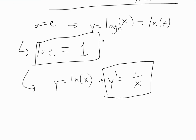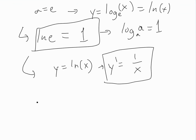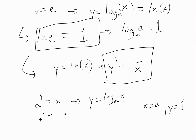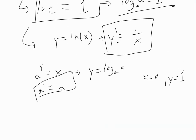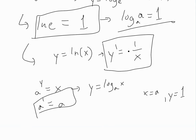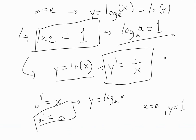A quick note: log_a(a) = 1. We can see why: if a^y = x and x = a, then y = 1, so a^1 = a — it checks out perfectly. This is also why natural log is used far more in real-world applications — its derivative is simply 1/x, without the extra ln(a) factor, which makes it much easier to work with.